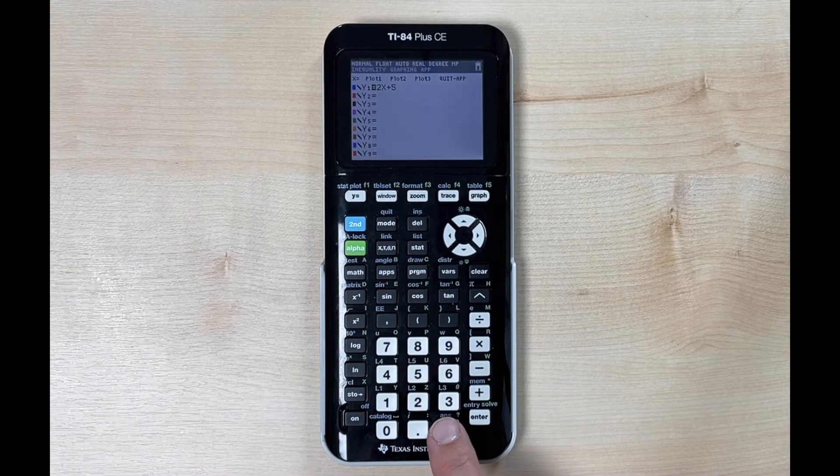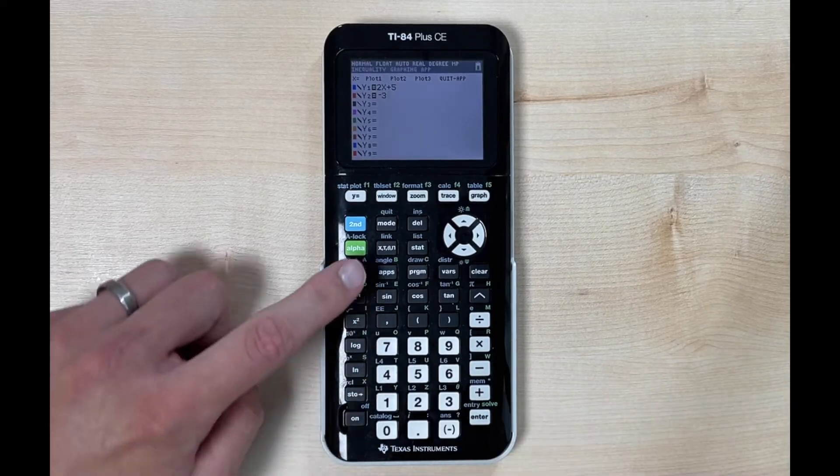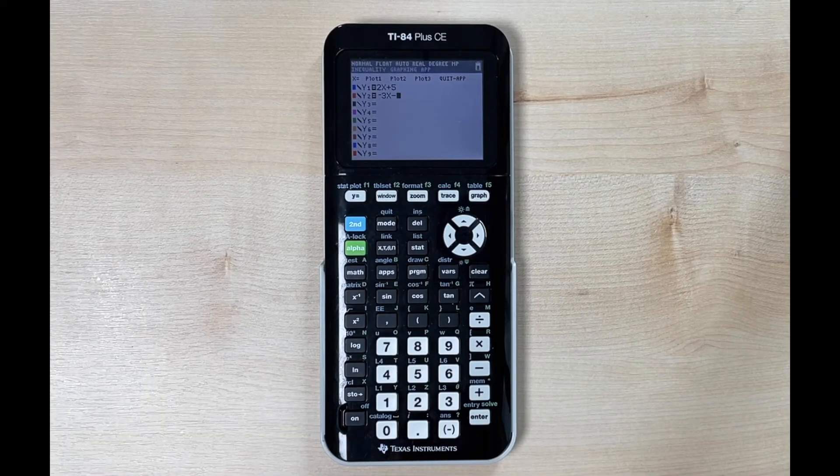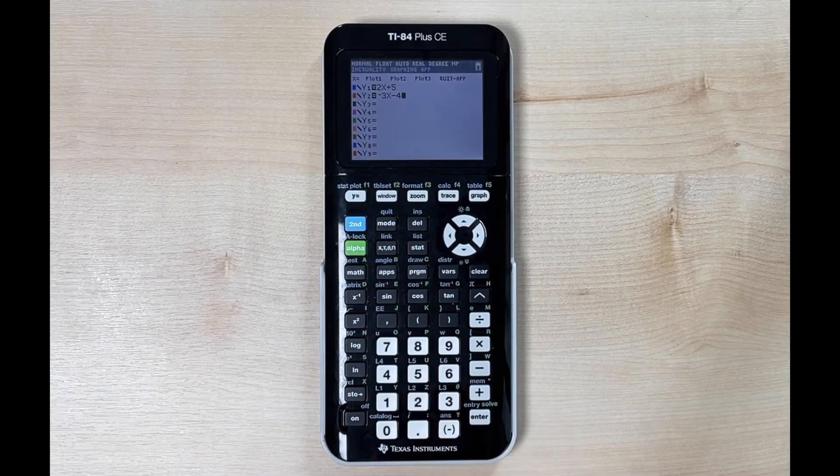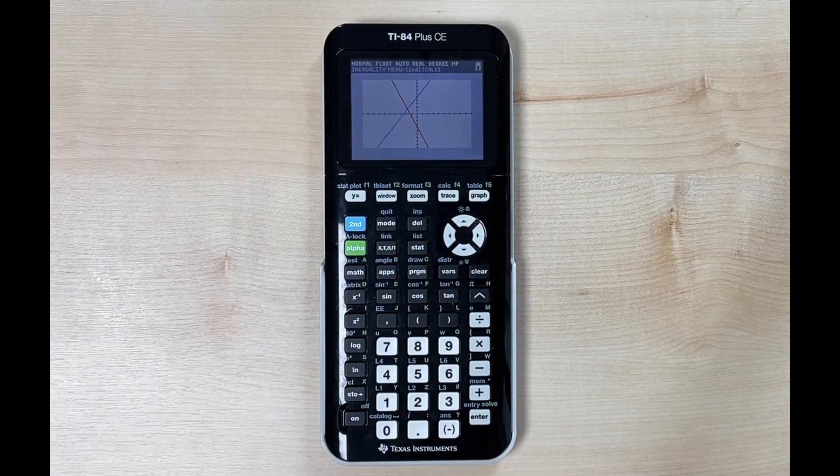So if we want to do a negative slope we hit the negative key. Let's say we want to do negative 3x and then minus. So we would do the subtraction key on that one and let's say minus 4. We hit graph again and then it will graph our second function there.